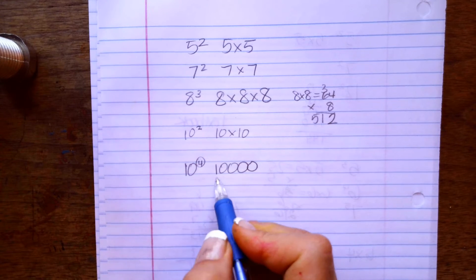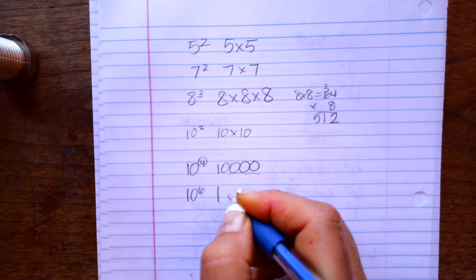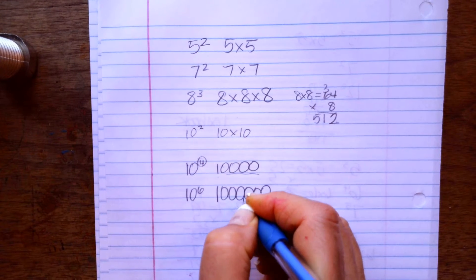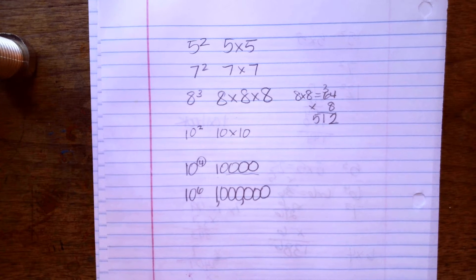So you put a 1 with 4 zeros. 10 to the sixth power would be a 1 with 6 zeros. And that's your shortcut. It only works for the tens, though. So okay, that's the first type of problem.